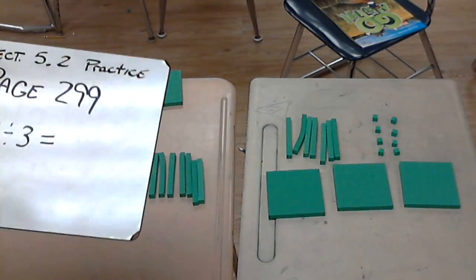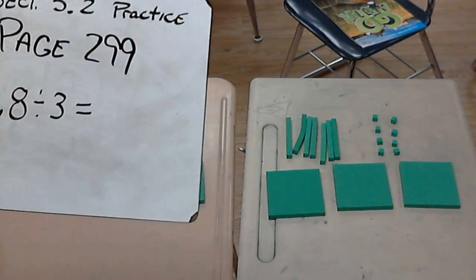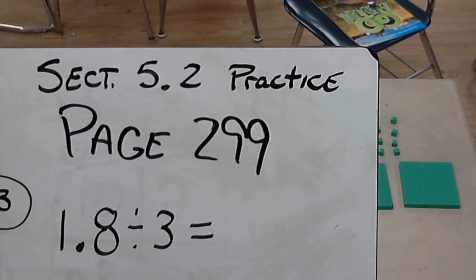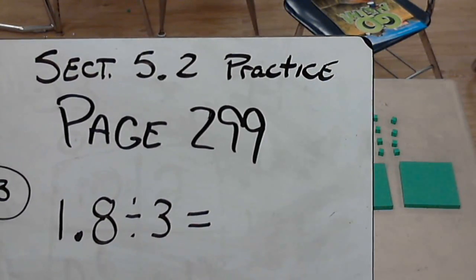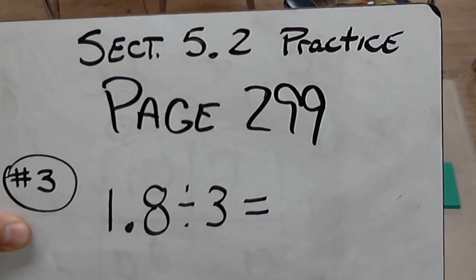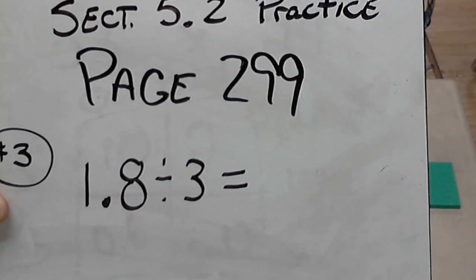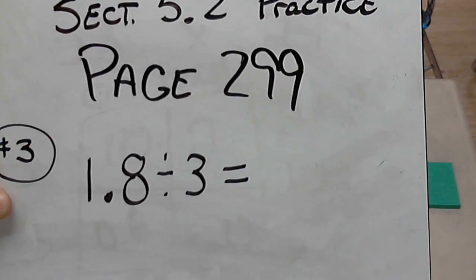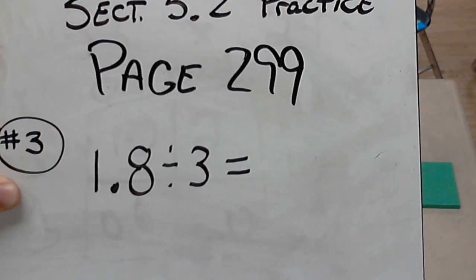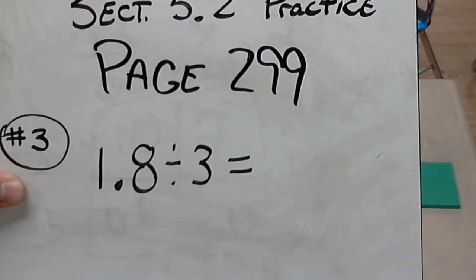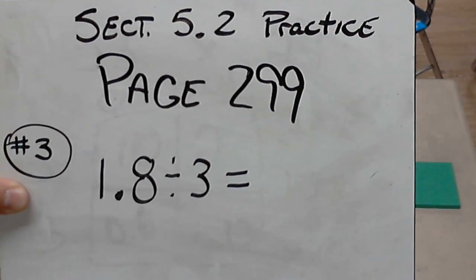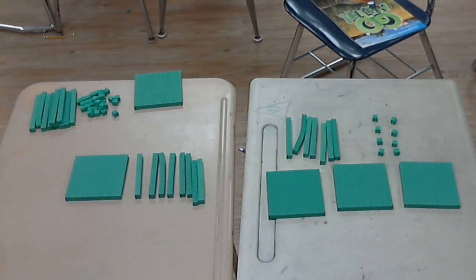Hi guys, we have section 5.2 practice page 299 in our books and we're going to work on number three, which is 1.8 divided by three — one and eight tenths divided by three. So we're working on a decimal divided by a whole number.